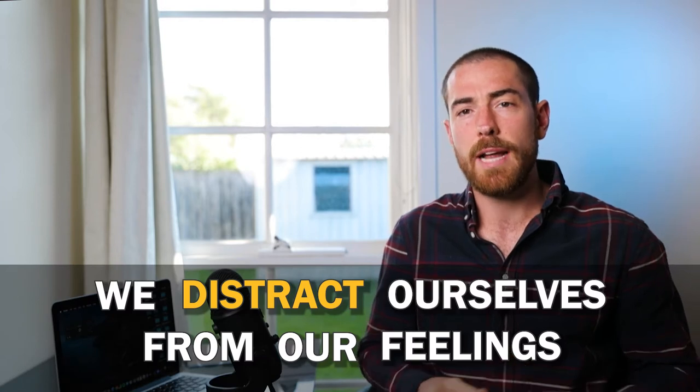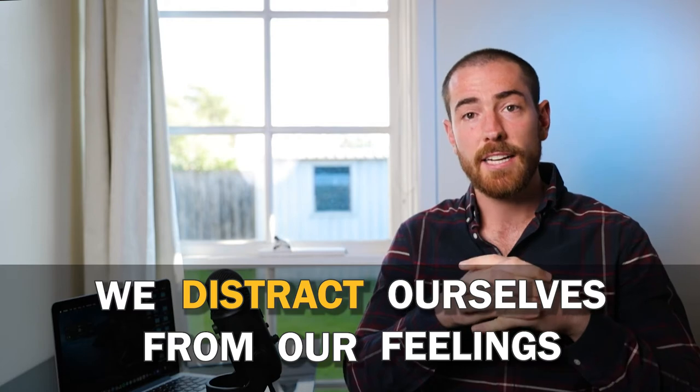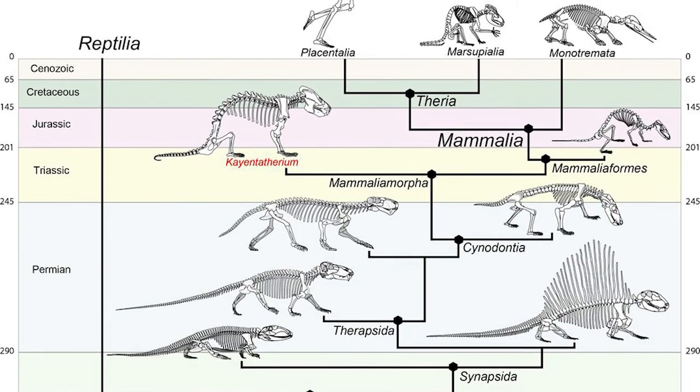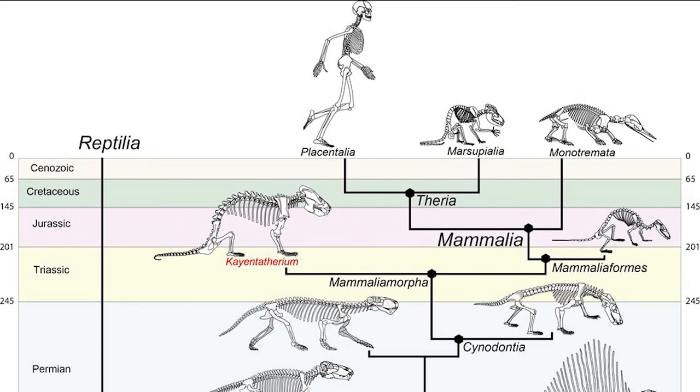Now if you think about the feeling brain, the mammals are about 210 million years old, so this kind of biology is very, very old.